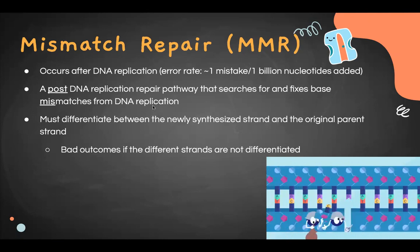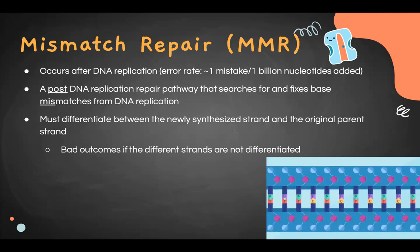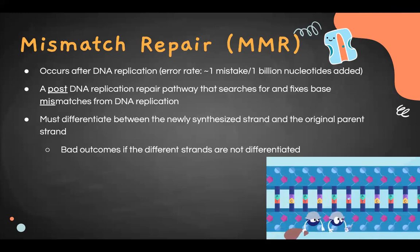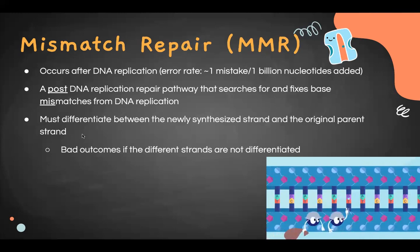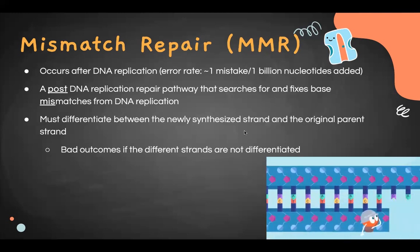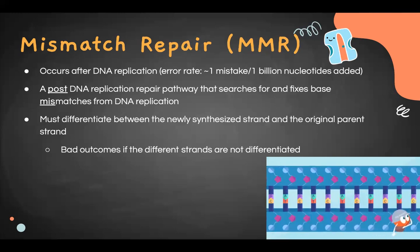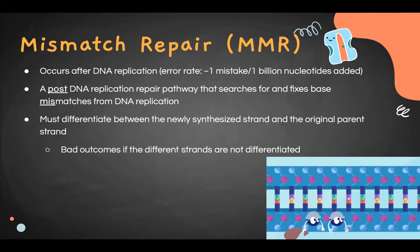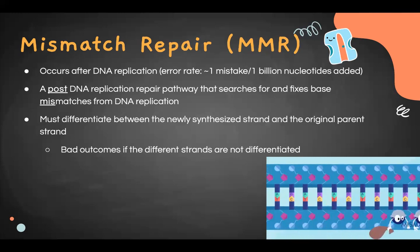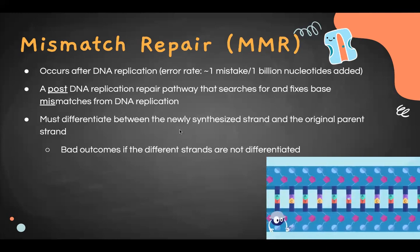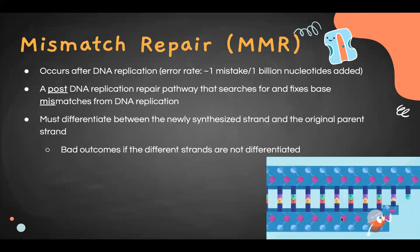Anything that proofreading didn't pick up, MMR can fix. To do so, the cell must differentiate between the newly synthesized strand and the original parent strand. You don't want to accidentally change a nucleotide on the parent strand — if you repair the wrong strand, that mutation will snowball into future replications and never be fixed.